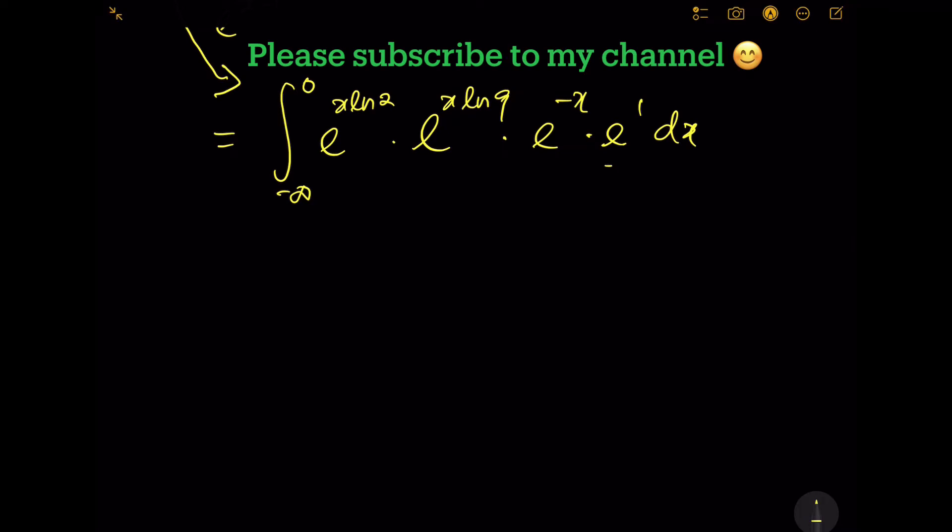The e^1 is constant, so we bring it out. This gives e times the integral from negative infinity to 0 of e^x times—let's factor everything first—ln 2 plus ln 9 minus 1, dx.